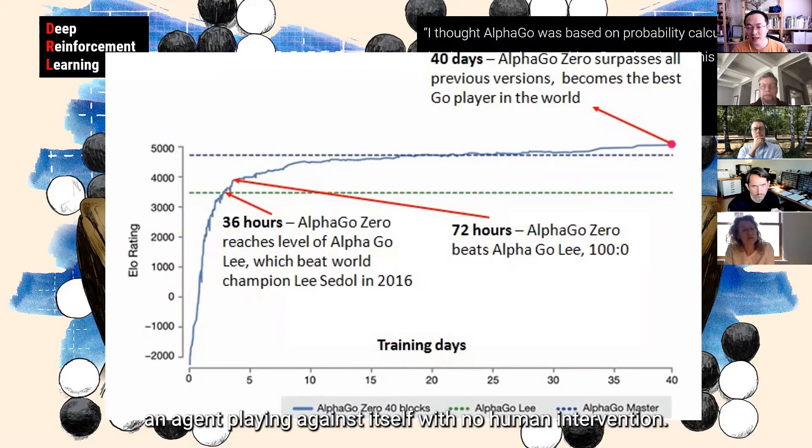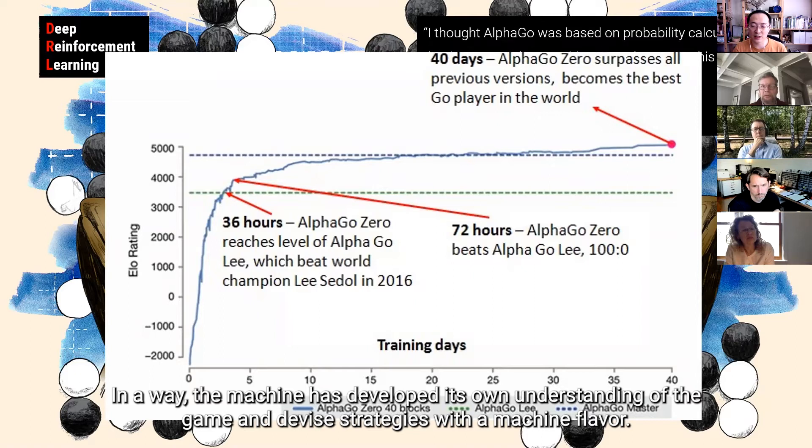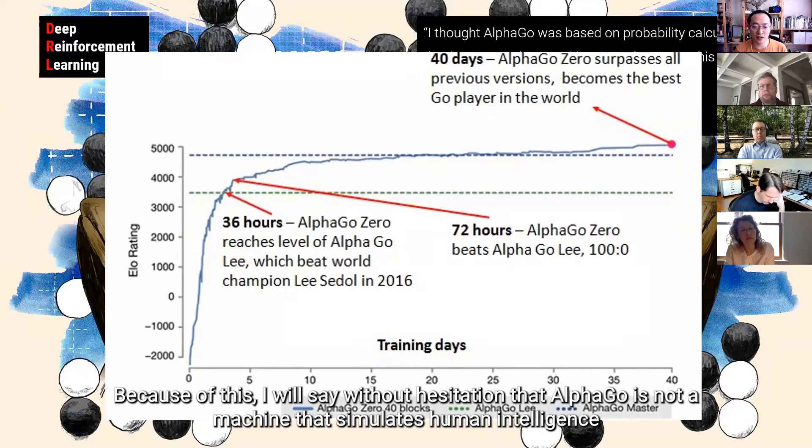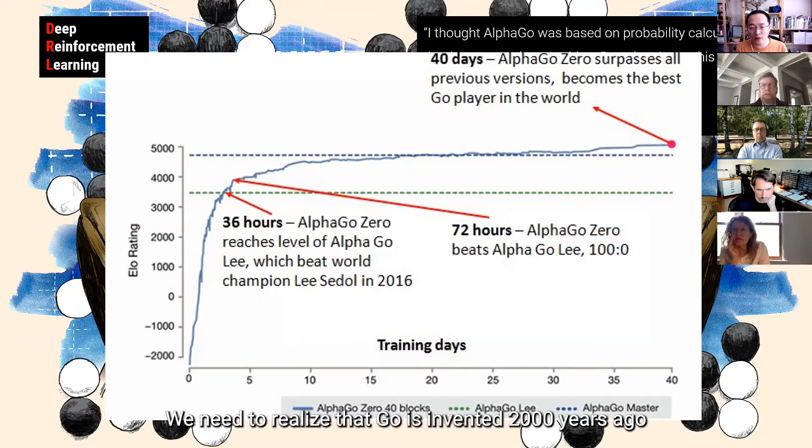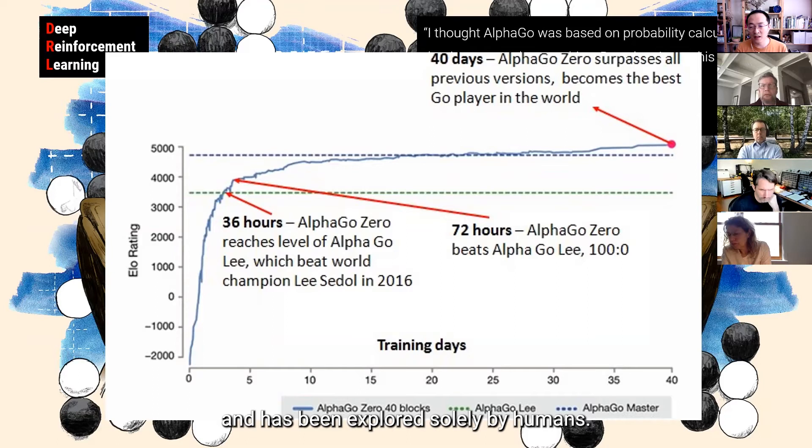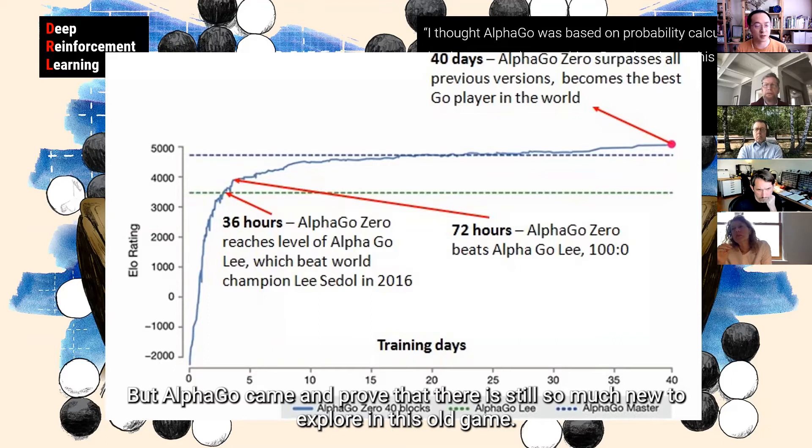So, most importantly, in a later version of AlphaGo Zero, the machine has no human knowledge input at all and surpassed all its previous versions. And it is trained with a technique called self-play, which means an agent playing against itself with no human intervention. In a way, we can say that the machine has developed its own understanding of the game and start to devise strategies with a machine flavor. And because of this, I will say without hesitation that AlphaGo is not a machine that simulates human intelligence, but a truly creative player. And one thing I want to mention is that we need to realize that Go is invented, the game of Go is invented 2,000 years ago and have always been explored solely by humans. And we think we have exhausted it. But AlphaGo came and proved that there is still much new to explore in this old game.